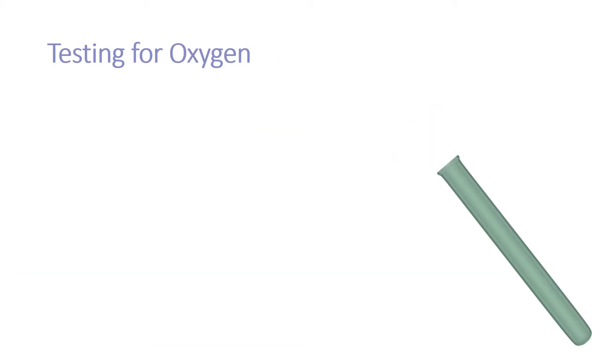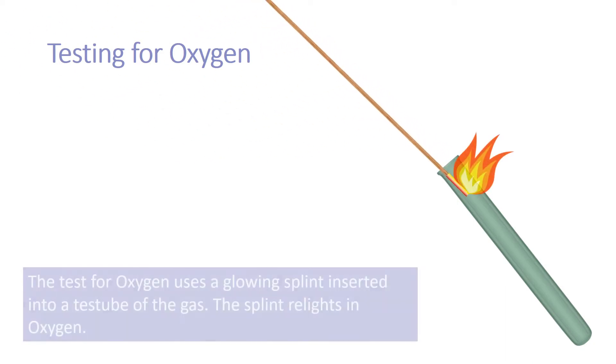To test for oxygen, place a glowing splint into the test tube of gas. The glowing splint will relight if oxygen is present.